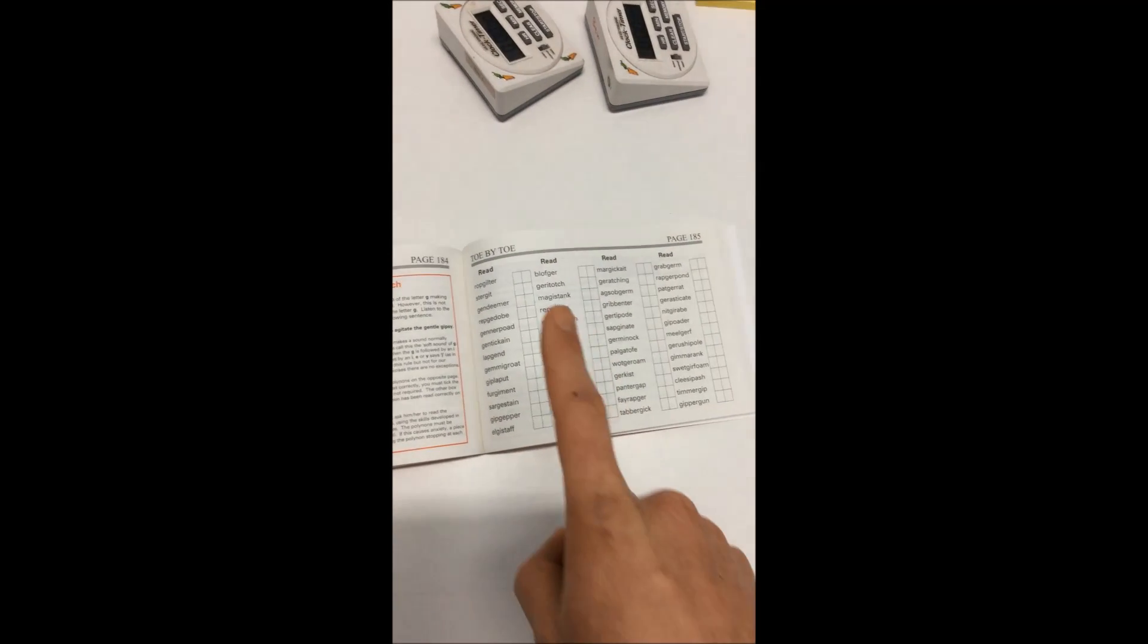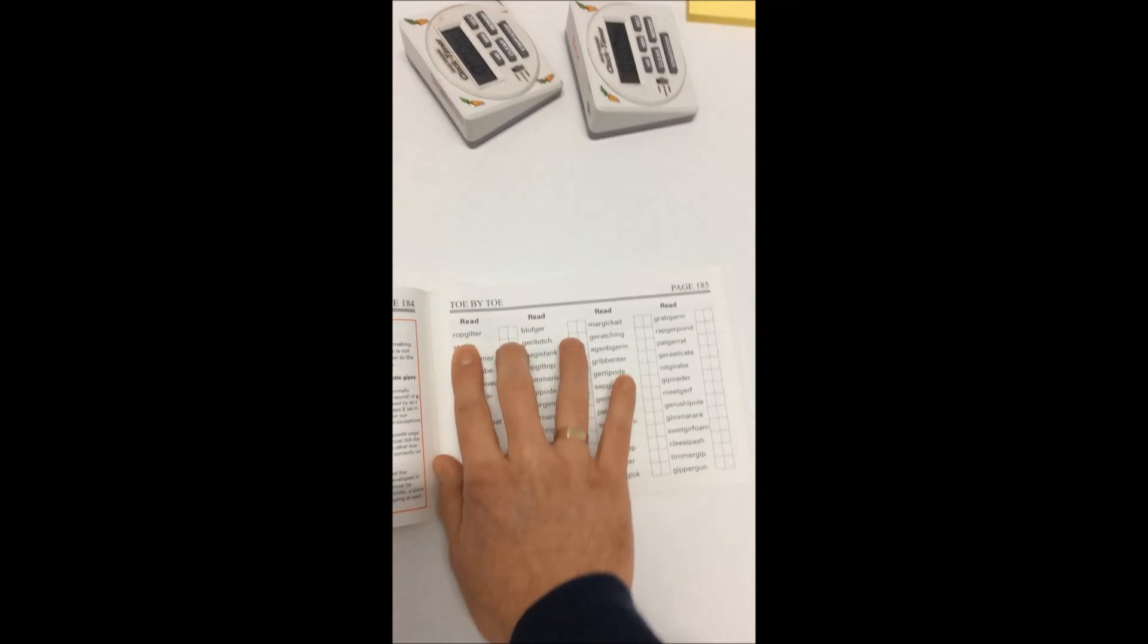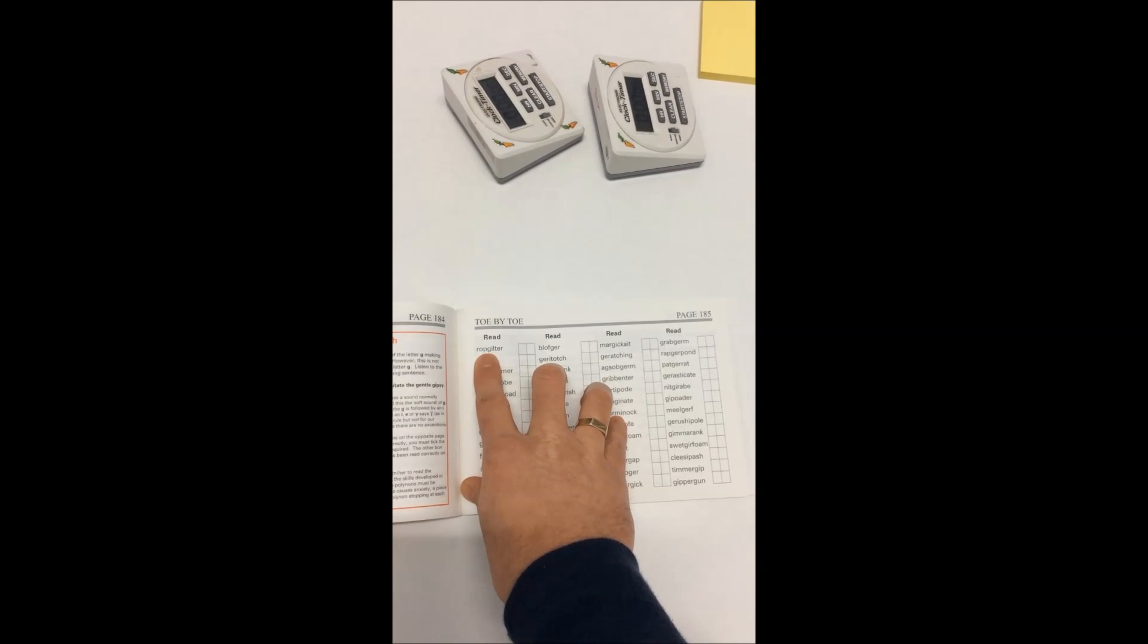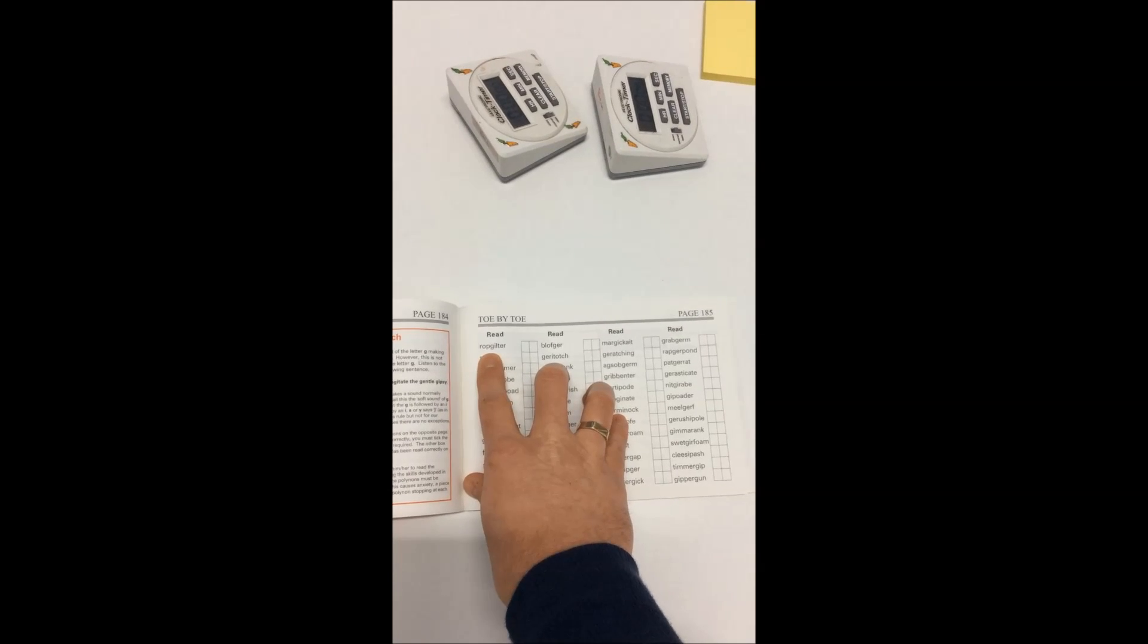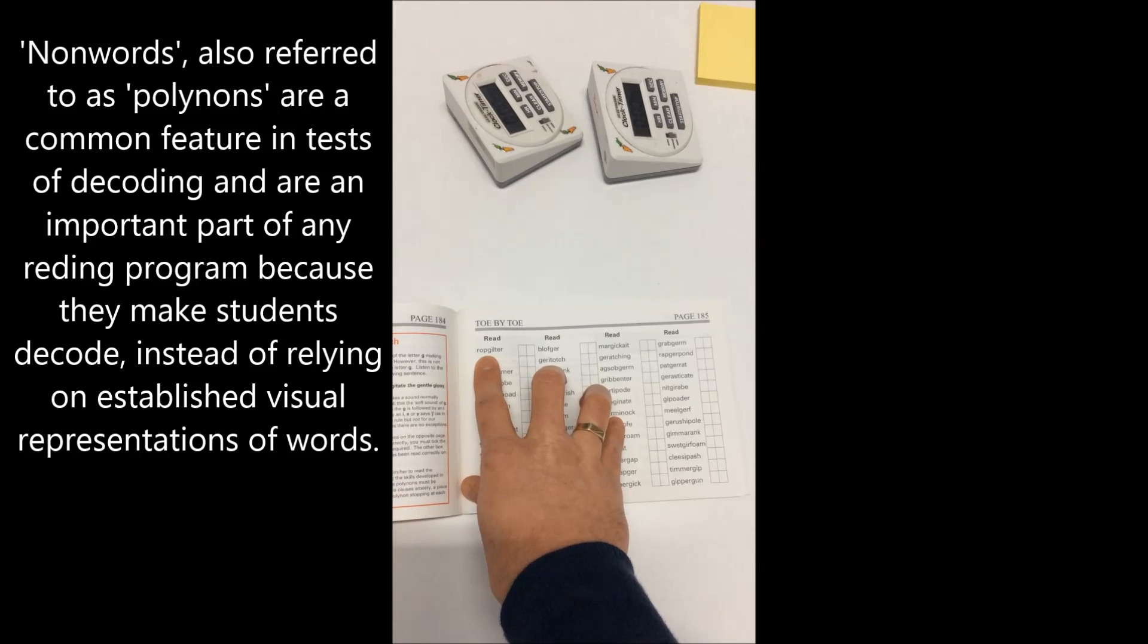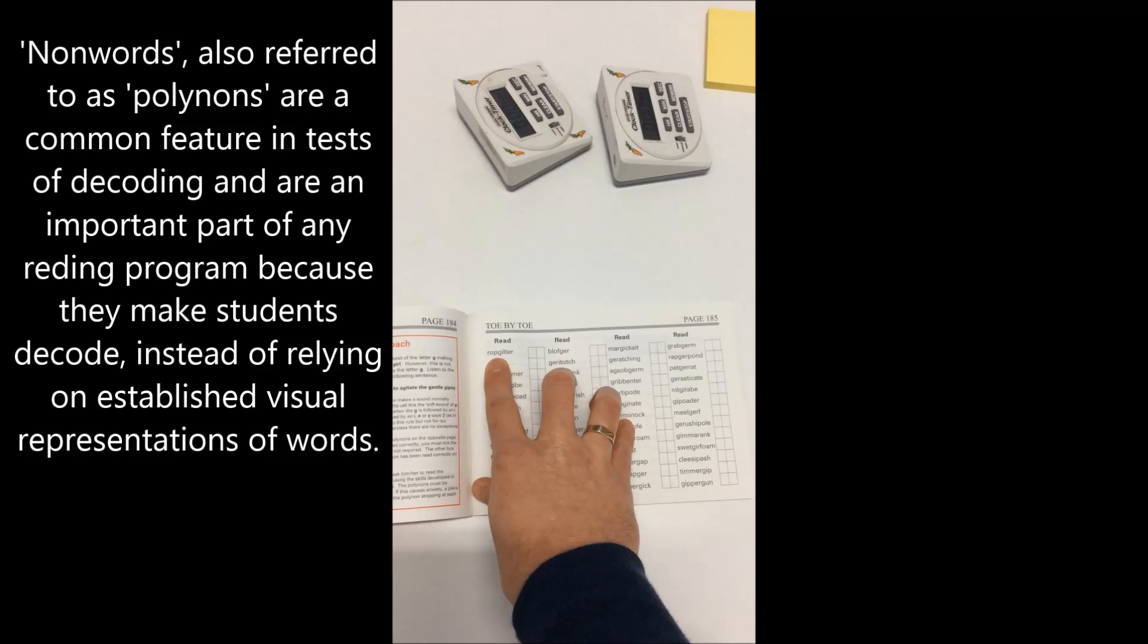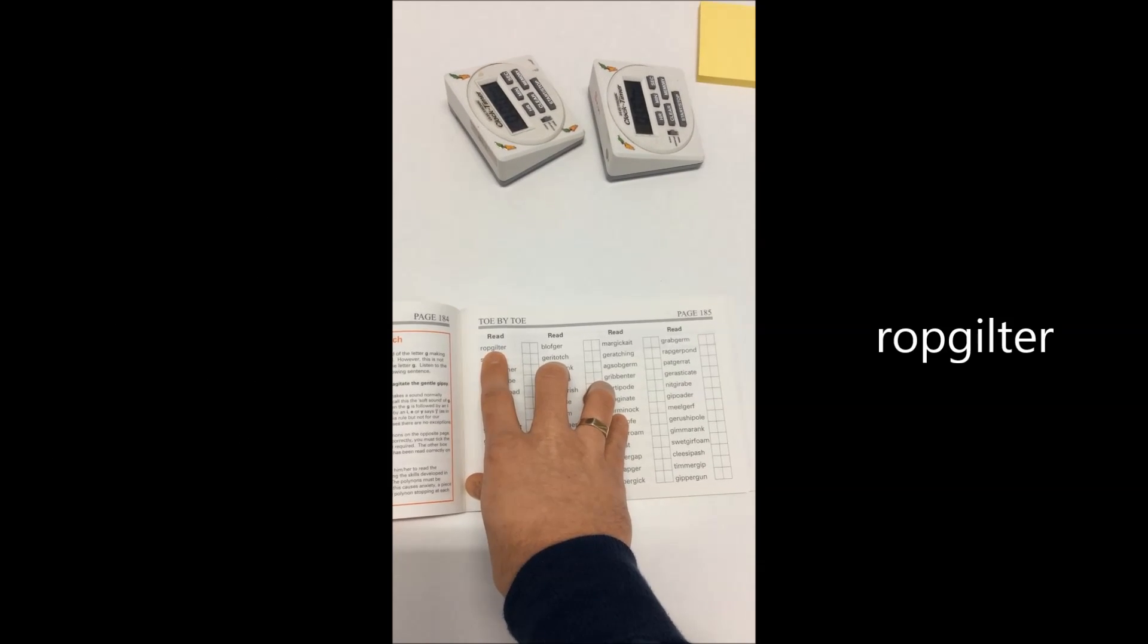The program explains that G in front of the vowels E, I, or Y will make the sound J. We call it soft G. You can have a look at that first word there, which is a non-word. Toe by Toe is full of these non-words because they force young people to decode instead of being able to recognize a word straight away. So this word would be ROP JILTER, and why is the G making the J sound? Because it's in front of the letter I.